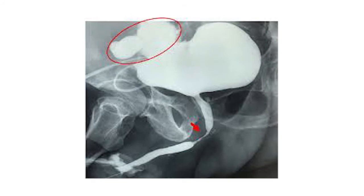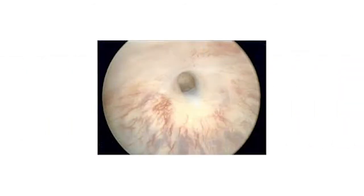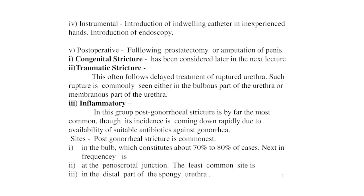Further images show extravasation of urine with stricture of the urethra, and a cystoscopic image showing the actual appearance of urethral stricture. The fourth cause is instrumental — indwelling catheters in inexperienced hands, endoscopy — and fifth is post-operative stricture following prostatectomy and amputation of the penis.